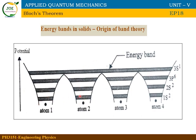The outermost band is called the valence band. The valence band involves consecutive atoms. If you have a periodic potential barrier, the electron can travel through it. This is the periodic potential.